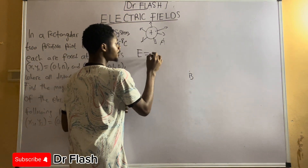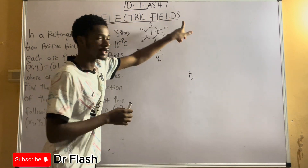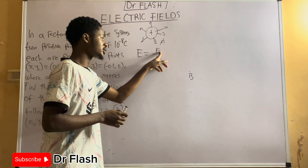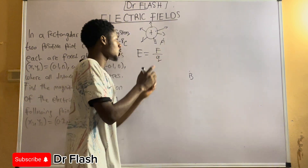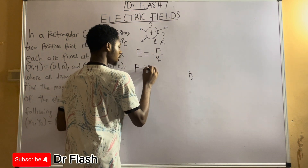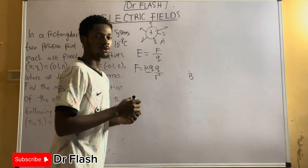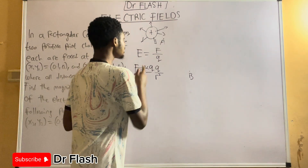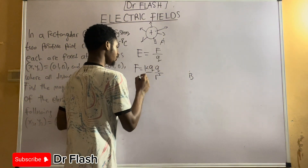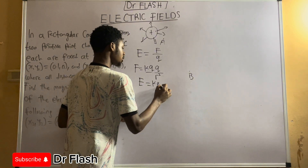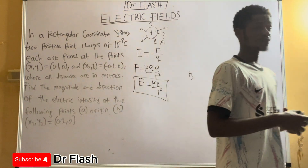The electric field strength or electric field intensity has a formula. Since F equals kQ1Q2 over r squared from Coulomb's law, and we substitute for the case of a single charge in a region of space, we get E equals kQ over r squared. Here, r is not the distance between two point charges but rather the distance from one charge to the space where we want to calculate the electric field strength.